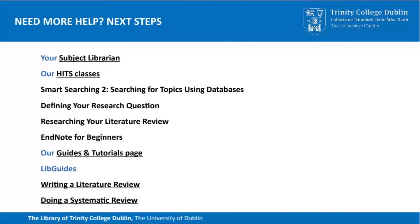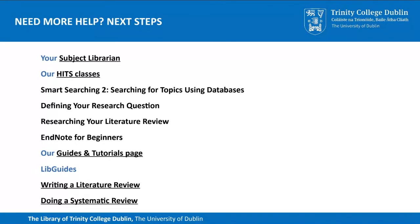If you need more help, here are a few steps you can take. First, contact your subject librarian — their contact details will be on the subject librarians page from the library homepage. Try attending more of our HITS classes, either in person, online, or by watching a recording like this one. We recommend trying Smart Searching 2: Searching for Topics Using Databases as a follow-up. Other classes include Defining Your Research Question, Researching Your Literature Review, and EndNote for Beginners. EndNote is software that manages bibliographies, which people find very handy for keeping control of references when writing an essay or dissertation. We also have a Guides and Tutorials page, which includes LibGuides on writing a literature review and doing a systematic review.